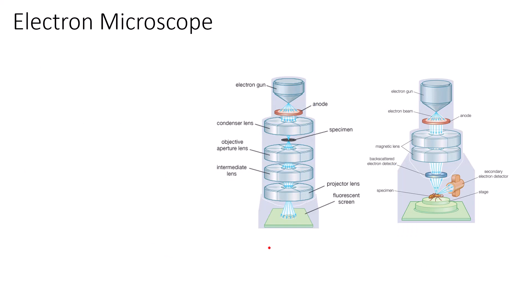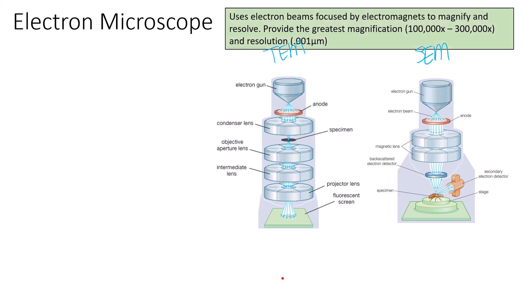There are two types of electron microscopes: the SEM (scanning electron microscope) and the TEM (transmission electron microscope). Both use an electron gun sending beams of electrons through a specimen, then collecting those electrons on a screen to generate an image. The TEM has electrons pass through the specimen to provide a 2D interior image, while the SEM bounces electrons off the surface, captured by an electron detector to produce a three-dimensional surface image.